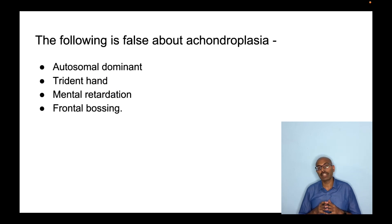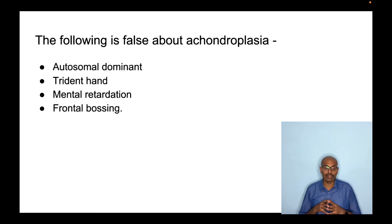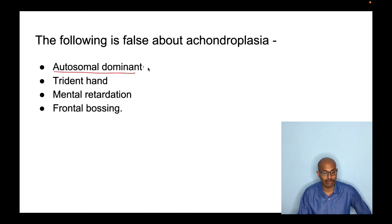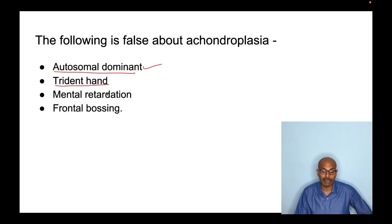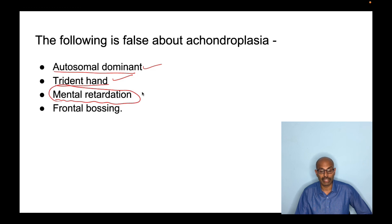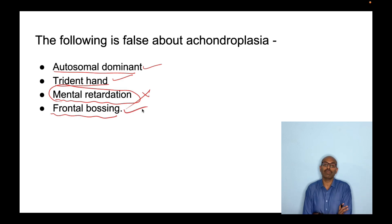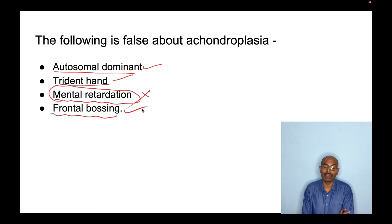The second question asks what is false about achondroplasia. Is it autosomal dominant? Yes. Does it have trident hand or starfish appearance? Yes. Is there mental retardation? No — there is no mental retardation, and this is the false statement. Does it have frontal bossing? Yes, there is frontal bossing and macrocephaly. So that recaps our achondroplasia discussion.